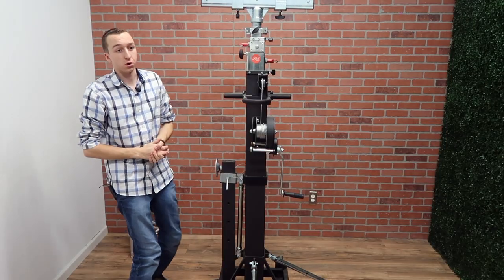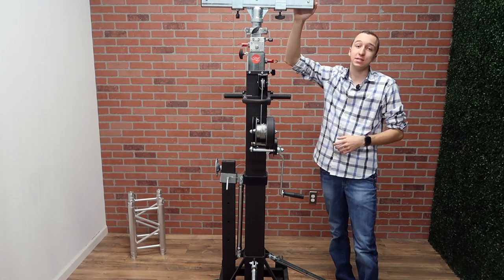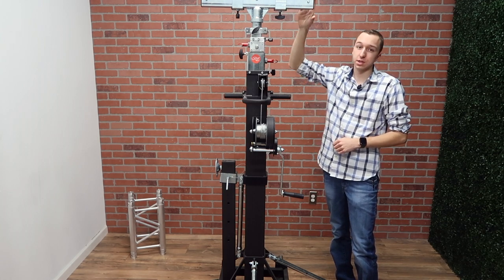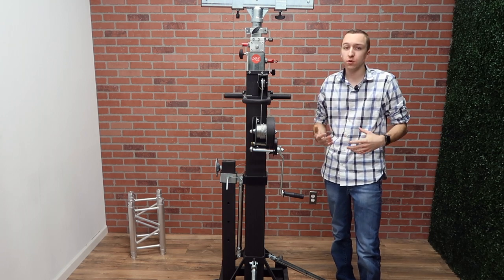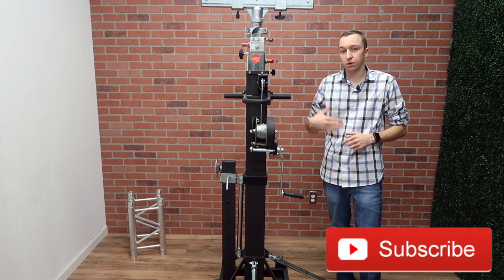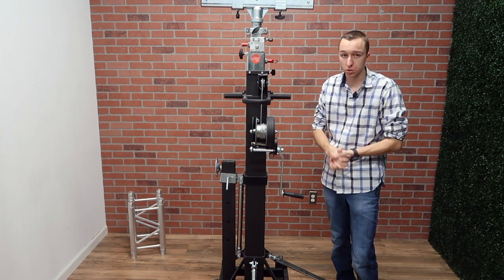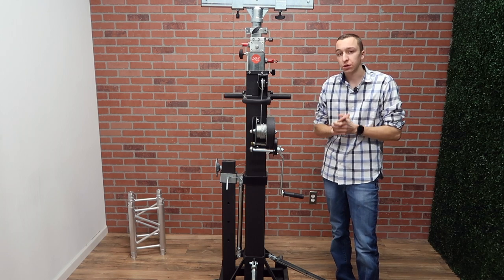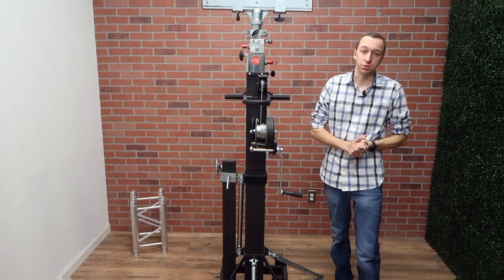Once again guys, this is the Global Truss ST-180 crank stand and the ST-SB-006, which is the top piece that holds the truss. If you found this video helpful, if you liked this video, make sure you guys leave a thumbs up. As always, make sure you subscribe to my channel for future content and future videos. Turn on that bell so you get notified when I post new videos. And as always, thank you guys for watching. If you have any questions, leave it down in the comments below. I appreciate it and we'll see you in the next one.